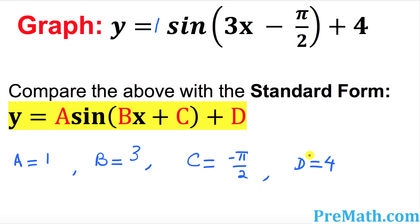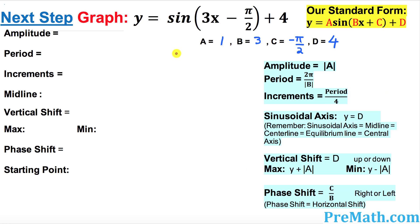So our next step is, once we figure out a, b, c, and d, we want to find the amplitude. The amplitude is always the absolute value of a, and a is one, so the amplitude is one. The period for sine is two pi divided by the absolute value of b, which gives us two pi divided by three.